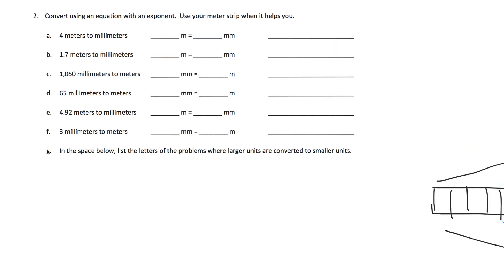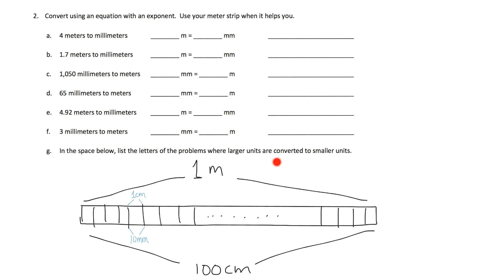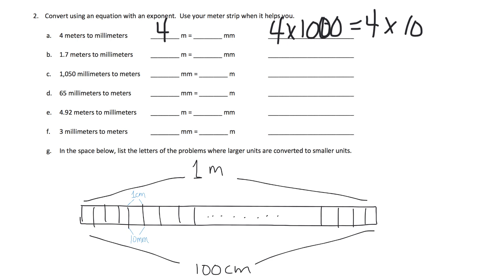More of the same kind of practice, just a little less scaffolded. If we're going to go from meters to millimeters, remember one meter is going to have a bunch of little millimeters — in fact, it's going to have 1,000 millimeters. So 4 meters into how many millimeters? Well, each meter has 1,000 millimeters. Another way to write that is 4 times 10 to the third power, which gives us 4,000.